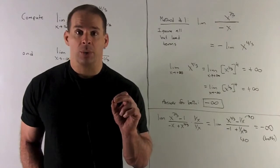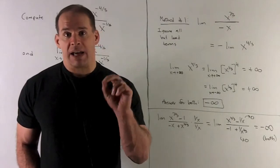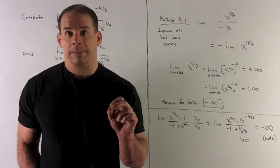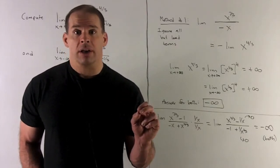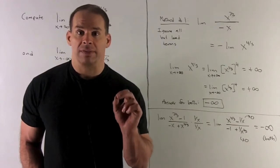Take the limit as we go to plus infinity. Here, we have x to a positive exponent, so that's going to go to plus infinity. There's a minus sign in front, so that switches the limit to minus infinity. So that's our answer, minus infinity.